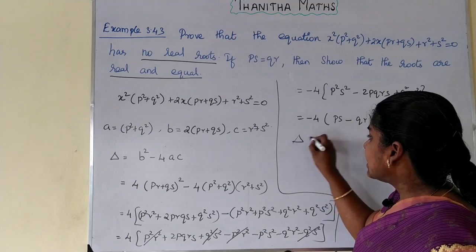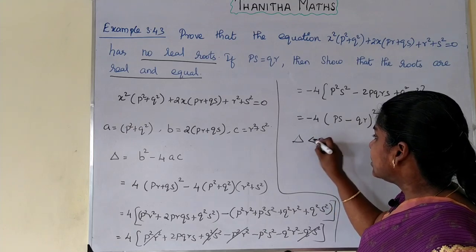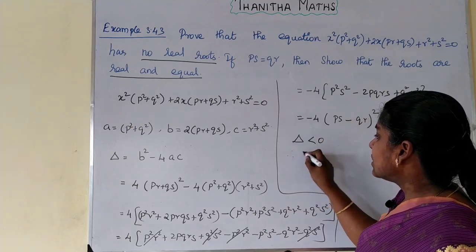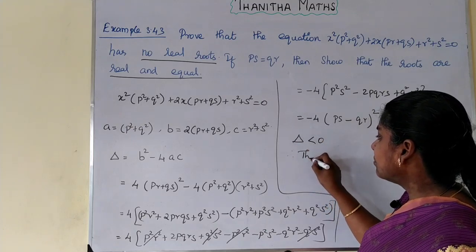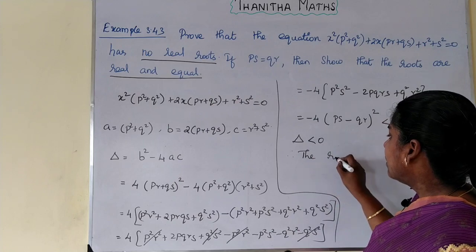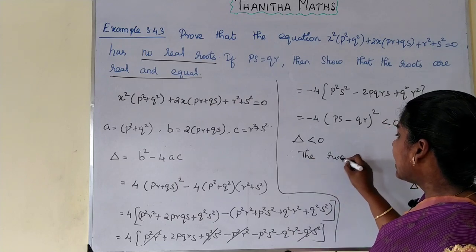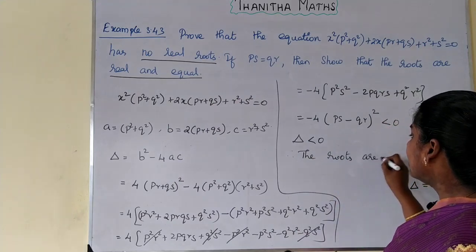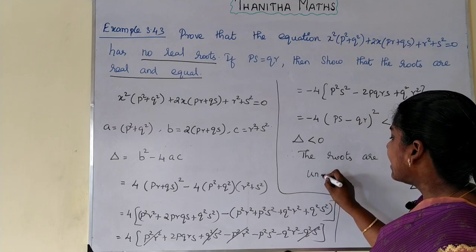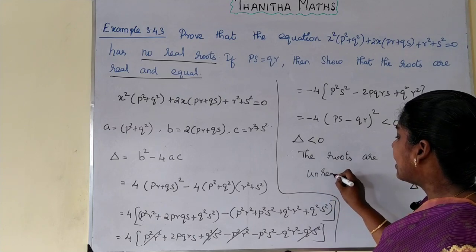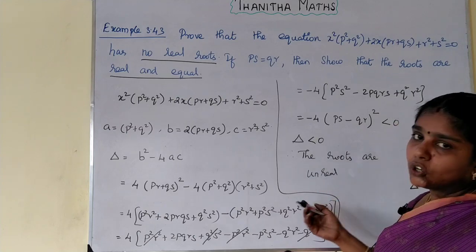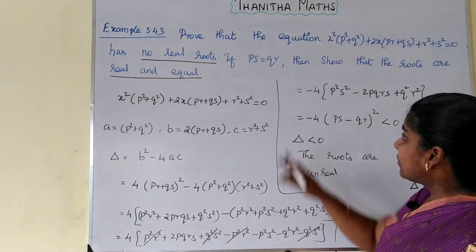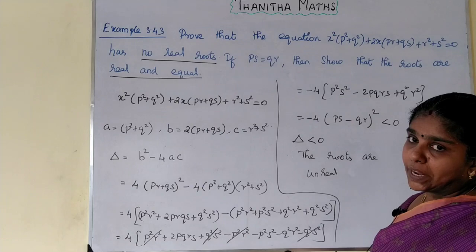Therefore delta is less than 0. Since the discriminant is negative, the roots are unreal — that is, the equation has no real roots. This proves the first part.